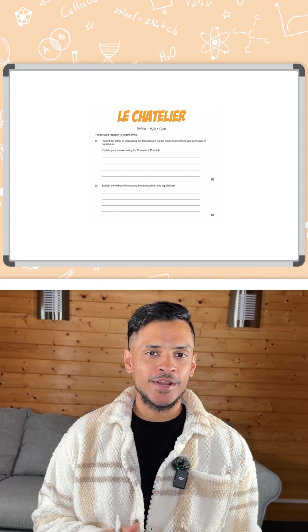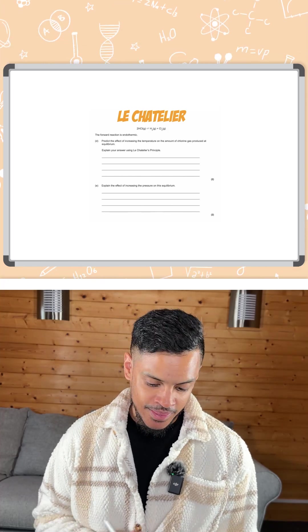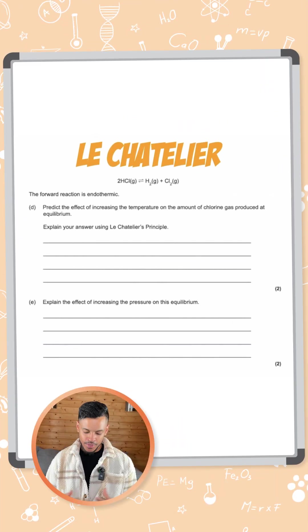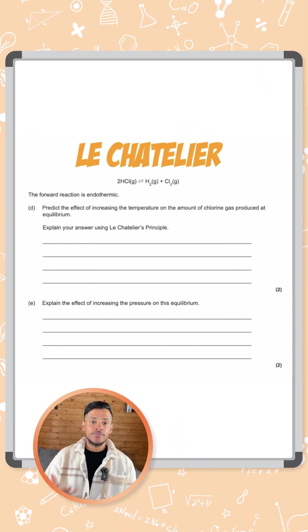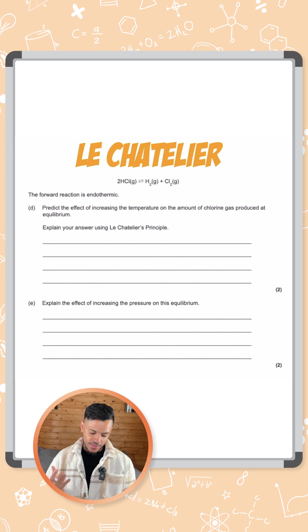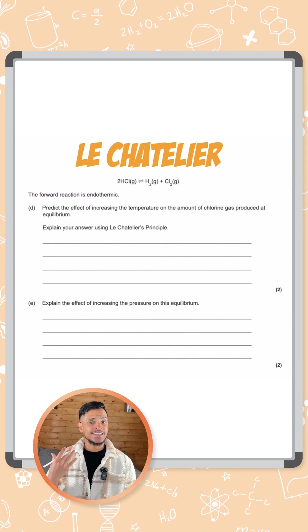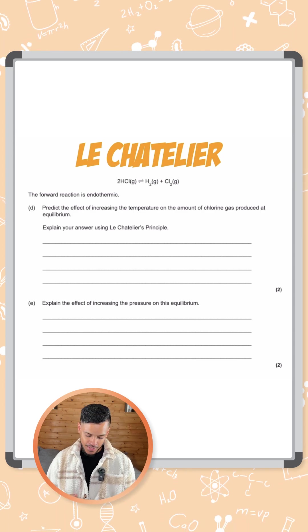Students hate this one. It's equilibrium and Le Chatelier's principle. We've got a reversible reaction where the forward reaction is endothermic.